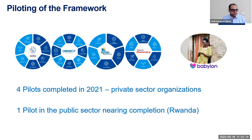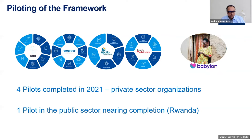This part of the presentation is on the piloting. This chart summarizes the four private sector pilots on the left side and one public sector on the right. We worked with Ada, Omnibot, Apollo Hospitals, and Tech Mahindra, and now we are wrapping up one with the company Babylon, which is UK-based, that is implementing the chatbot system in Rwanda. The four that were completed in 2021 were private sector, and the one we're now completing is the public sector one.